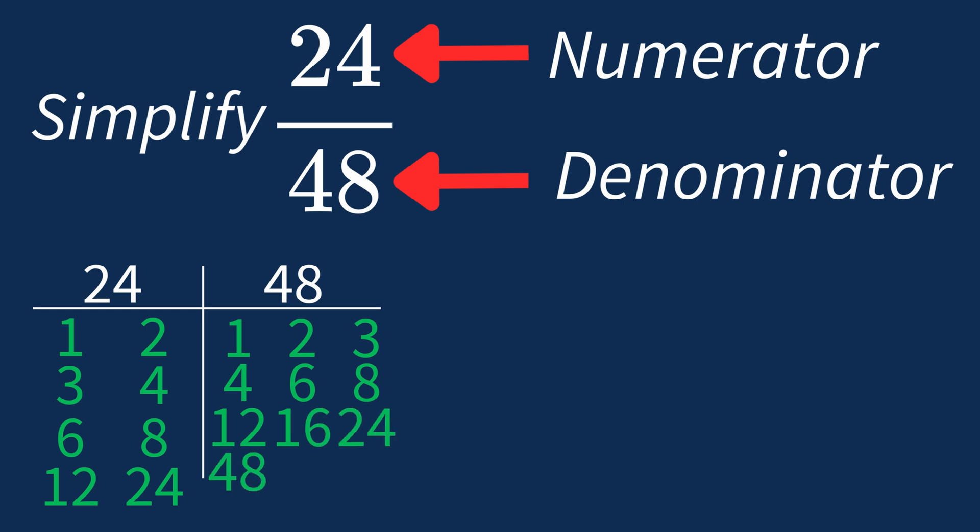So the largest common factor between 24 and 48 is 24. This means we can divide both the numerator and denominator by 24 to simplify the fraction.